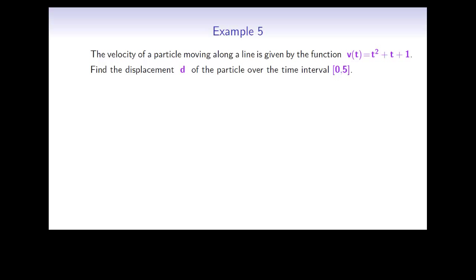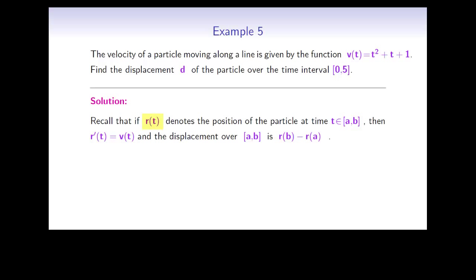The last example in this video is of an applied nature. The velocity of a particle moving along a line is given by v(t) = t² + t + 1. Find the displacement d of the particle over the time interval 0 to 5. Recall that if r denotes the position of the particle at time t, then r prime of t is the velocity, and the displacement over [a, b] is r(b) minus r(a). In our case, d equals r(5) minus r(0).